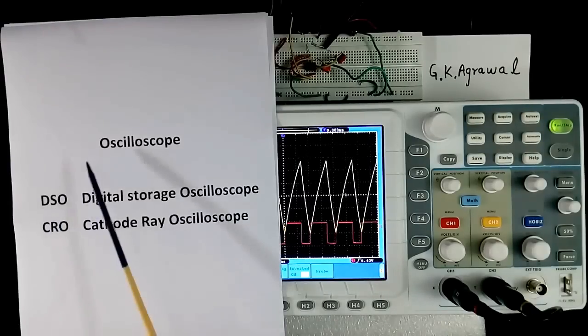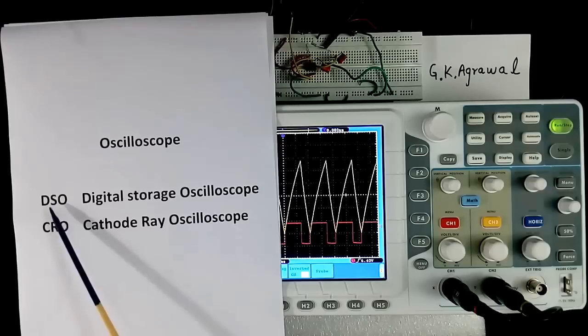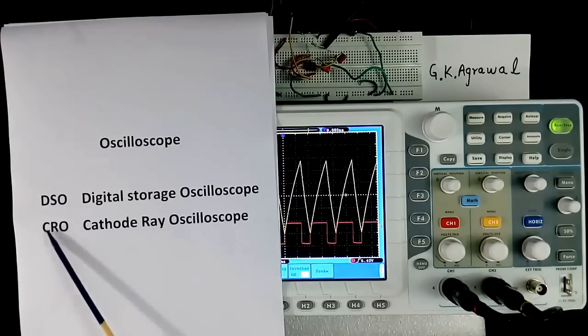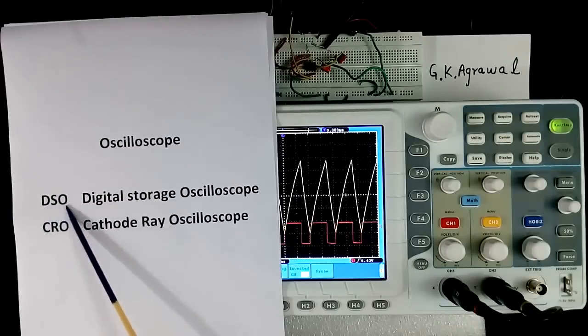Two types of oscilloscope are used mostly. One is DSO, one is CRO. DSO means digital storage oscilloscope. CRO means cathode ray oscilloscope. Basic function in both DSO and CRO are same.